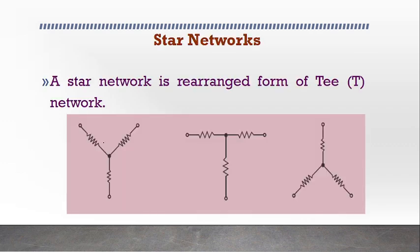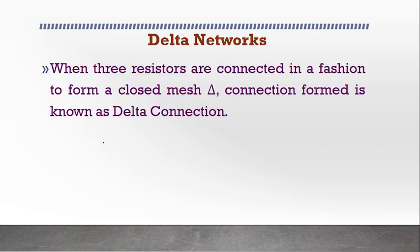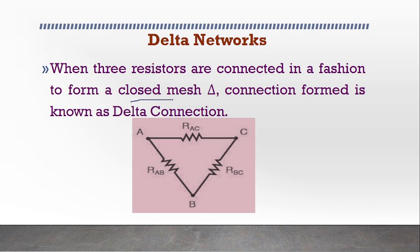These are the different ways of drawing a star network. Coming to the delta network, it will be in the form of a closed mesh, that is in the form of a delta shape. If the resistances are arranged in the form of delta, then that is called a delta network.